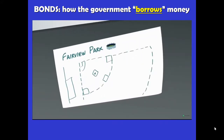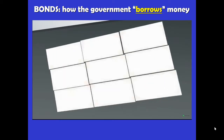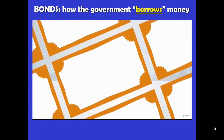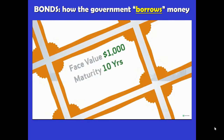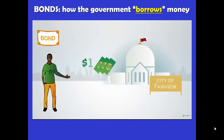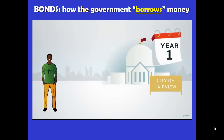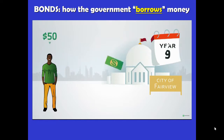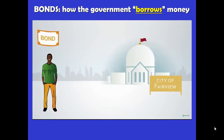Consider this example: the city of Fairview wants to build a new baseball stadium, so it issues bonds to raise money. Each bond is a loan for $1,000, which Fairview promises to pay back in 10 years. To attract investors, Fairview agrees to pay an annual interest rate of 5%, also known as a coupon rate. An investor buys the bond at face value for $1,000. Each year, the city pays the investor $50. After 10 years, when the bond reaches maturity, Fairview returns the investor's $1,000 principal investment.